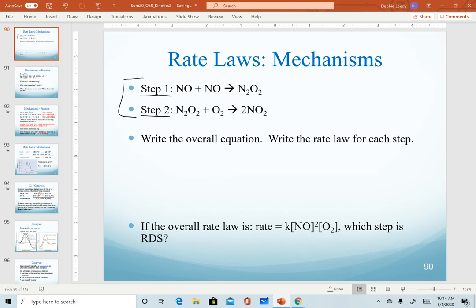So again, here we're asked to write the overall equation. Same process as before. We want to cancel out anything that is the same on both sides. So just our N2O2 will cancel. And when you cancel something out, that is a hint that it will be an intermediate or a catalyst, by the way.